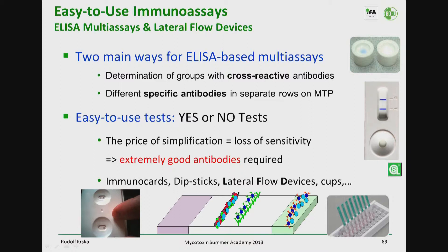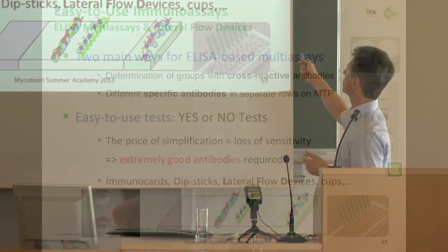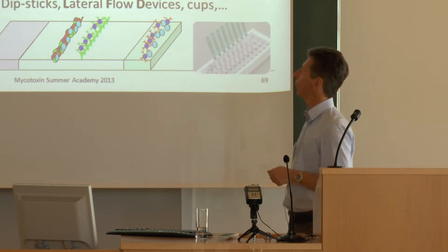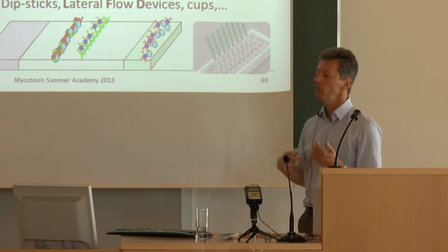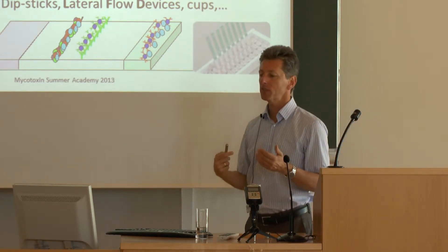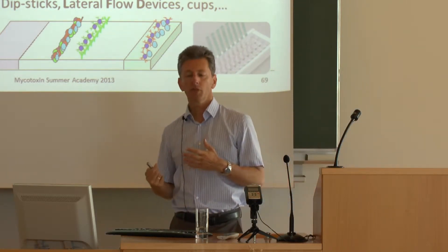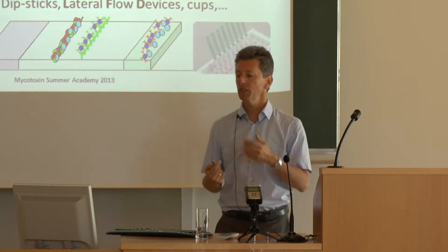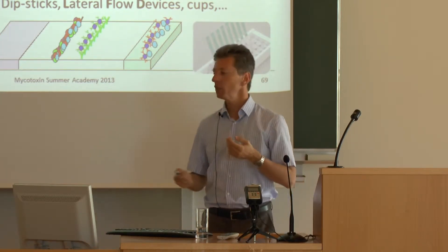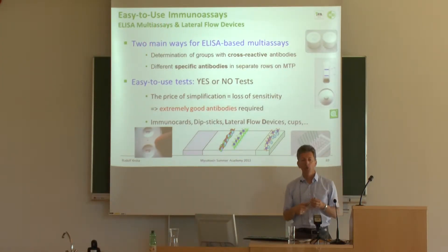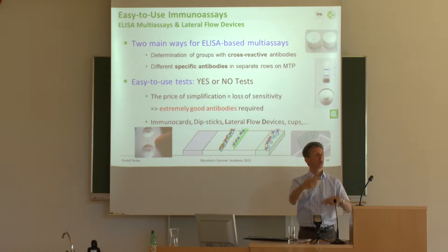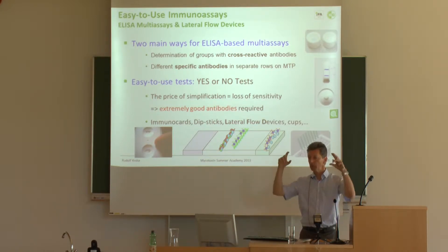Or you use different specific antibodies in separate rows — for instance, different rows or microtiter plates. Usually the rapid tests are easy-to-use yes/no tests. However, the price for the simplification is a loss of sensitivity. Strip tests like this are not as sensitive as an ELISA test, also because there is no washing step, hardly any rinsing step. With ELISA you have more degrees of freedom.